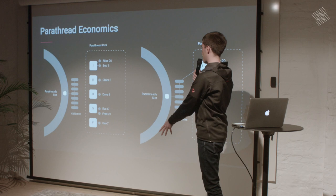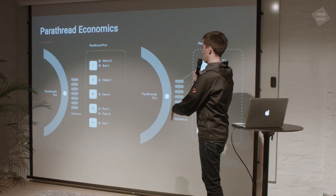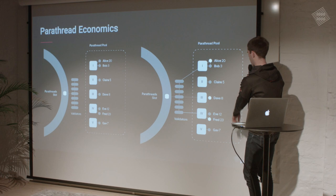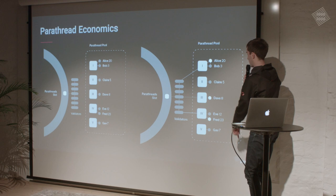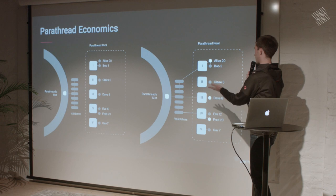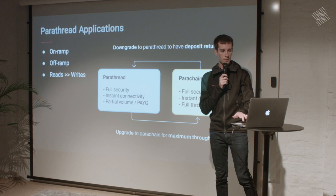Just as an example of these auctions: you have a pool of parathreads, none of them are connected to validators, and they're all bidding. You get multiple collators on each parathread, and they're all making bids in dots to the relay chain validators to include a block. Alice, Dave, and Fred have won the auction. Eve does not, because you can only get one block per chain, so third place goes to Dave. Once you win the auction you connect to some validators and you can submit your block for execution.